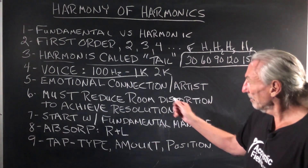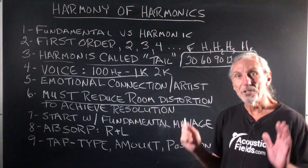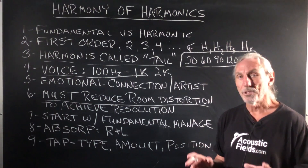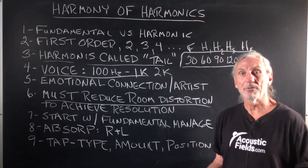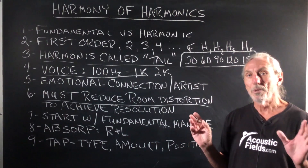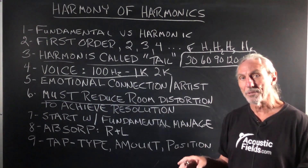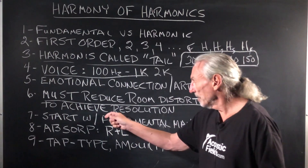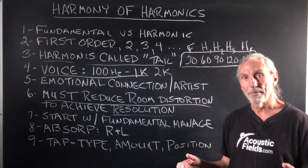To get that emotional connection, we've got to reduce room distortion — it's the only way. This is where all the complications come in. People just don't understand that. They use absorption — building insulation, denim, cotton — without really understanding that the rate and level of that material type is critical for music and voice. So if we're going to go after resolution, we have to complement the music and the voice with the proper rate and level of absorption.